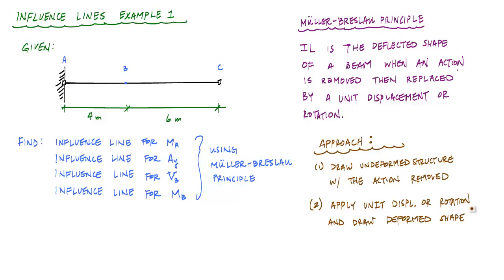And usually with a statically determinate structure and you're doing influence lines for it, and you use Mueller-Bresslaw principle, usually they're just a bunch of rigid body motions for the different segments, and you'll see what I mean by that. Then third, I like to calculate values based purely on geometry. And lastly, I like to redraw the influence line nice and neat.